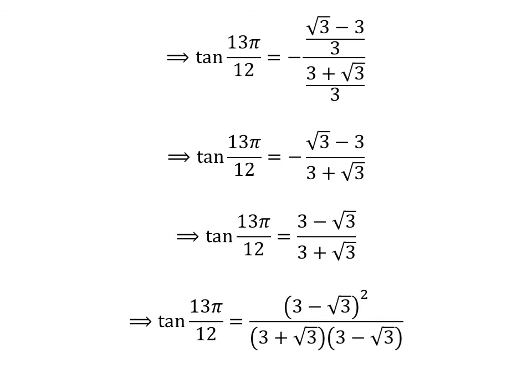Let us rationalize the fraction, as multiplying the numerator and the denominator by a common factor does not change the value of the fraction. So let us multiply the numerator and the denominator by 3 minus square root of 3. We get tangent of 13 times pi upon 12 is equal to the square of 3 minus square root of 3, upon 3 plus square root of 3 times 3 minus square root of 3.